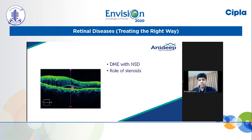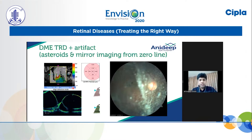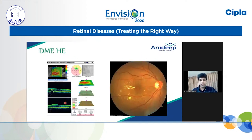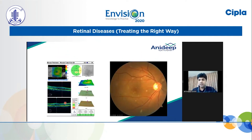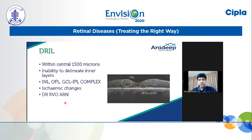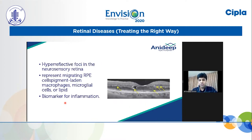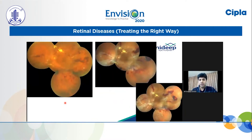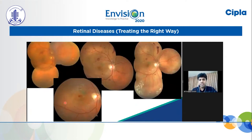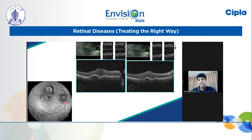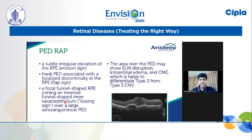DME with neurosensory detachment shows the role of steroids in this particular case. The tractional retinal detachment and artifacts due to asteroid hyalosis are shown, along with hard exudates highlighted here. Newer terminologies like DRIL — disorganization of the retinal inner layers — and hyperreflective foci showing the inflammatory origin of the DME process are important. This case of a diabetic patient turned out to have a RAP lesion, showing that OCT helps us identify various pathologies in a single retina.